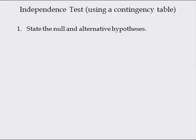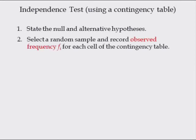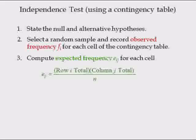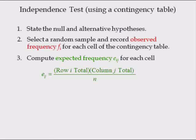For the independence test, first state the null and alternative hypotheses. The null hypothesis for the independence test is always of the form: the row variable is independent of the column variable. Select a random sample and record the observed frequencies for each cell of a contingency table. Compute the expected frequency of the cell in the i-th row and j-th column, which equals the product of row i's total and column j's total, divided by the sample size.